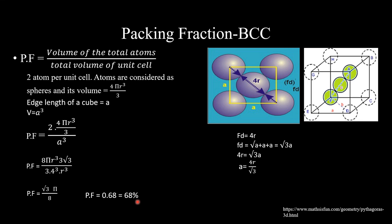Calculating this gives a packing fraction of 0.68, which equals 68%. This means the free space in BCC is 32%. Comparing the two: simple cubic has a packing fraction of 52% with 48% free space, while BCC has 68% with only 32% free space — meaning BCC is more tightly packed.